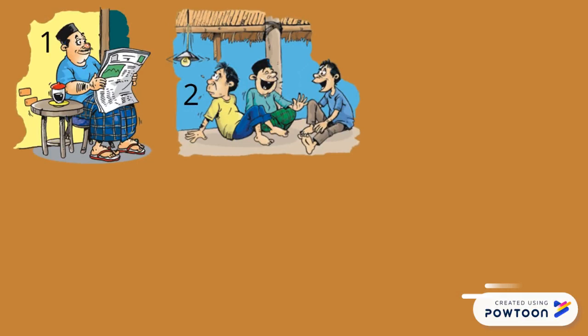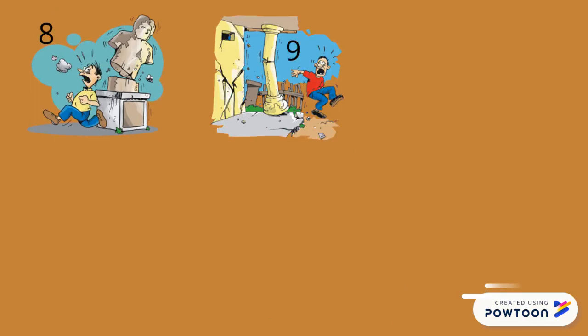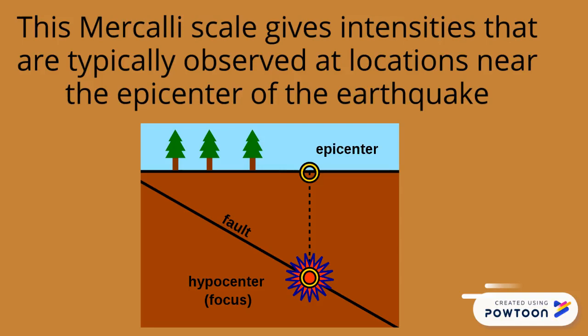The lower degrees of the Mercalli scale generally deal with the manner in which the earthquake is felt by people. The higher numbers of the scale are based on observed structural damage. This Mercalli scale gives intensities that are typically observed at locations near the epicenter of the earthquake. I hope this has helped because that's your Geography Minute.